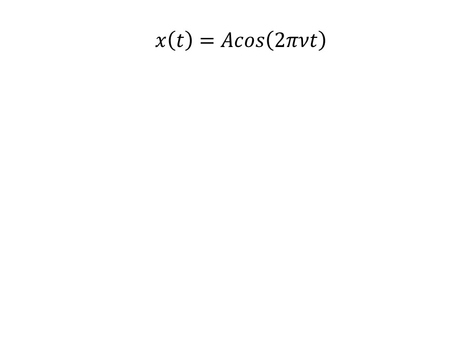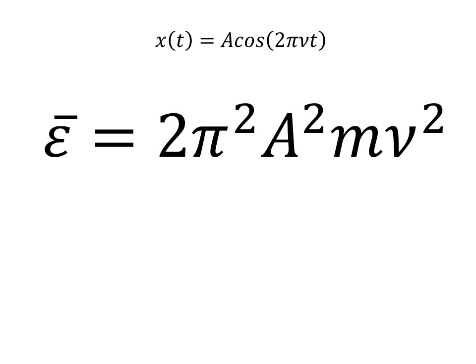Thus, let us observe a simple linear oscillator described by the shown equation. The expression for the average energy of a single oscillator is as shown, from which it is obvious that even if the various individual oscillators have one and the same frequency ni, they may have different amplitudes A.